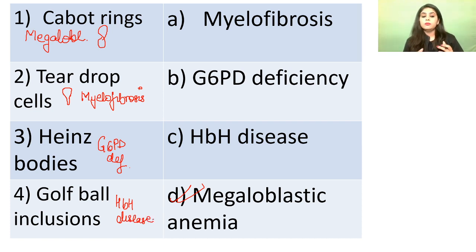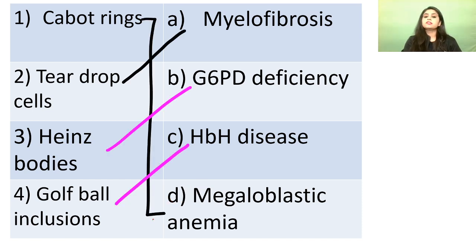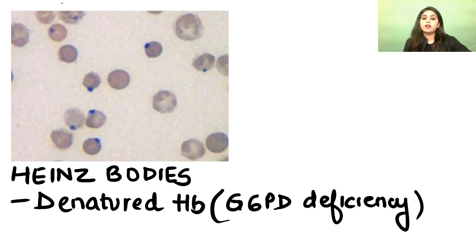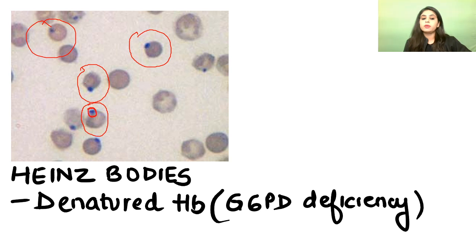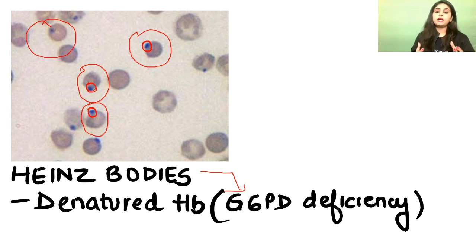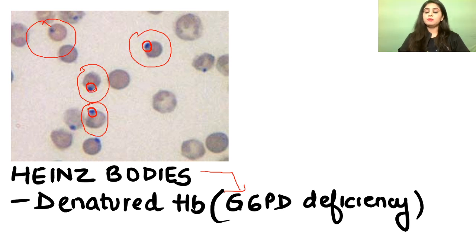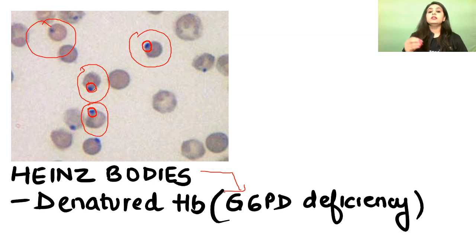Looking at the images: Heinz bodies appear as blue dots at the periphery of RBCs in G6PD deficiency — composed of denatured hemoglobin. When G6PD enzyme is deficient, RBCs are under oxidative stress and hemoglobin gets denatured, forming Heinz bodies.